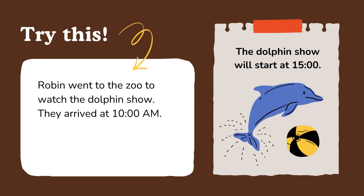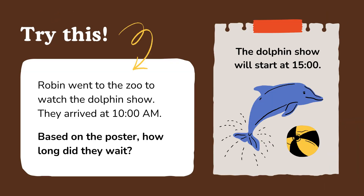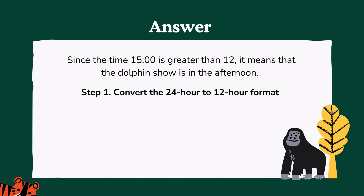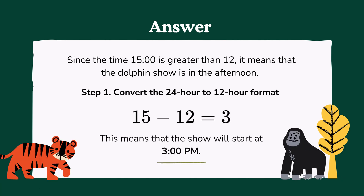Try this: Robin went to the zoo to watch the dolphin show. They arrived at 10 AM. Based on the poster, how long did they wait? The dolphin show will start at 15 o'clock. Since 15 o'clock is greater than 12, it means the dolphin show is in the afternoon. Step 1: Convert 24 hour to 12 hour format. 15 minus 12 equals 3, so the show will start at 3 PM.